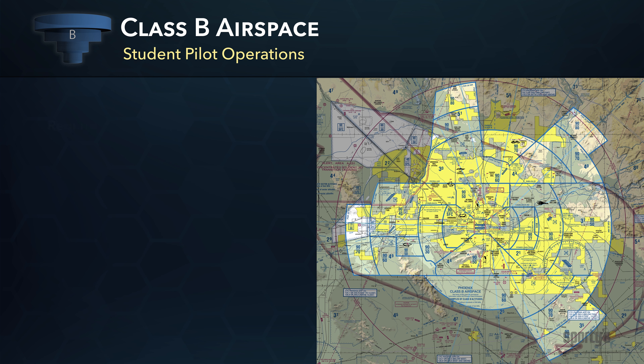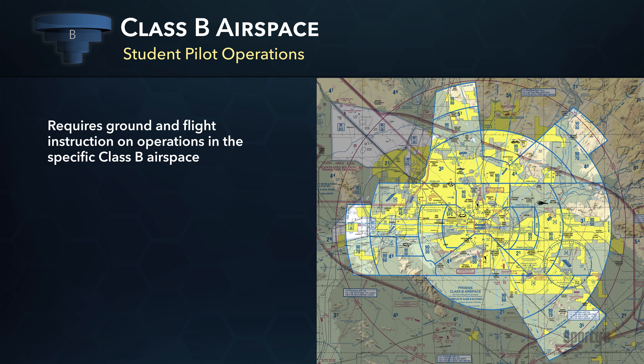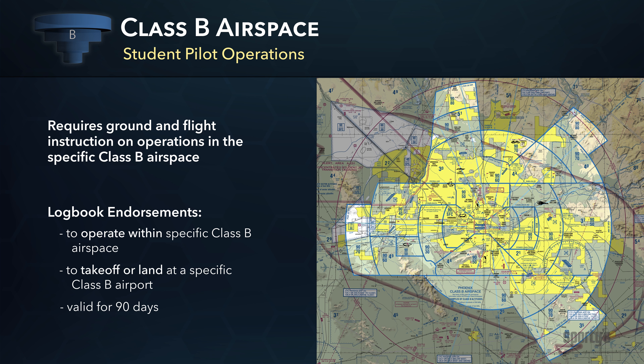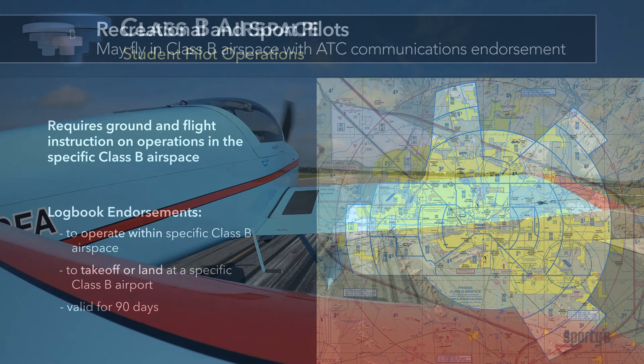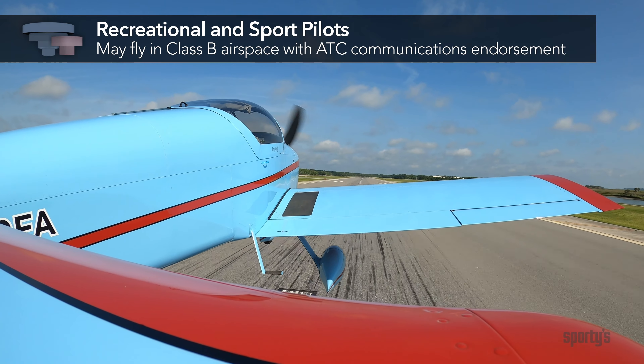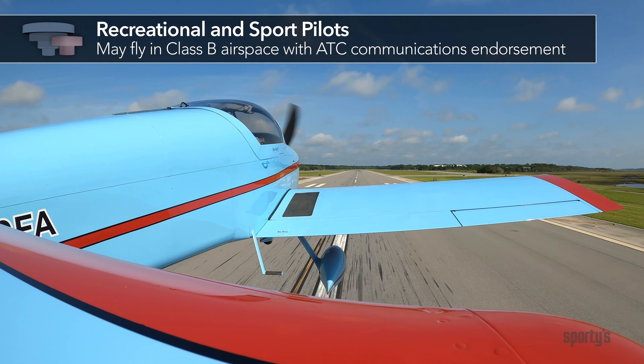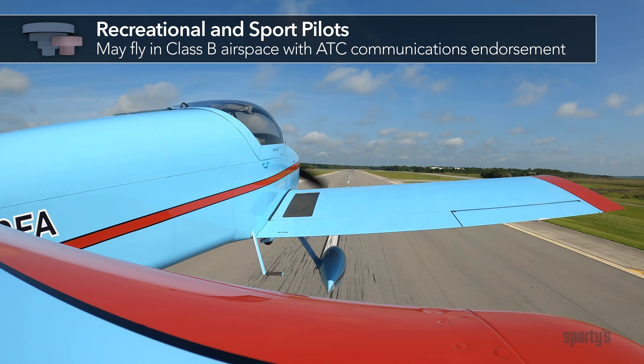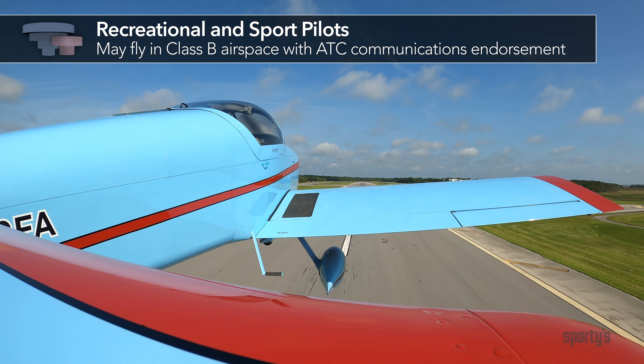Student pilots cannot take off, land, or fly solo in Class B airspace unless they have received ground and flight instruction for the specific Class B airspace. The student's logbook must have been endorsed within the previous 90 days by the instructor who gave the flight instruction. Recreational pilots may fly in Class B airspace after receiving an endorsement for ATC communication.